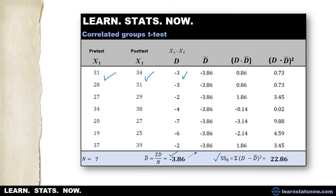The next step is to subtract the mean of the d scores from each d score — that's the second column from the right — and then square those deviation scores, which gives us the sum of squares.